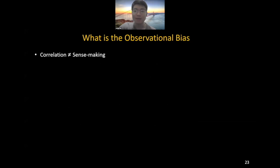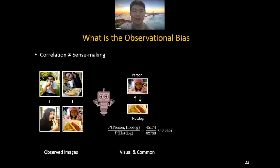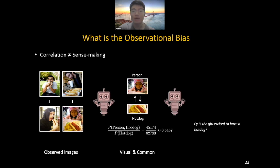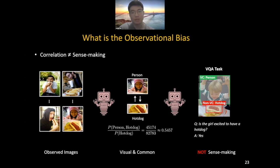What is observational bias? For example, given a large number of images containing both person and hot dogs, the machine may build spurious correlations between person and hot dog since they are commonly observed together many times. Then in downstream tasks — for example in VQA — when we ask 'is the girl excited to have the hot dog?', the machine may wrongly attribute attention to the hot dog rather than the person, which leads to cognitive errors and is not sense-making.